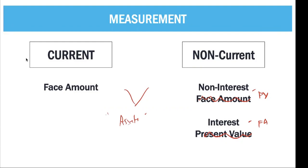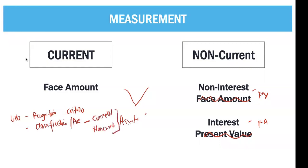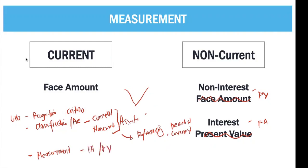So what did we learn here about liabilities? For liabilities, we learned recognition — where the criteria are: it must be a present obligation, unavoidable, and there must be a settlement. Then it must be probable and measurable. We also talked about classification or presentation — either current or non-current — and within that, we discussed refinancing and breach of covenant. Lastly, measurement is either face amount or present value.